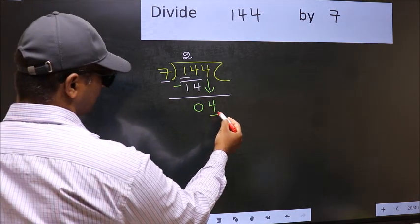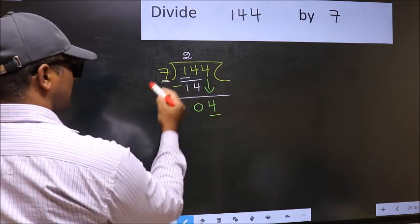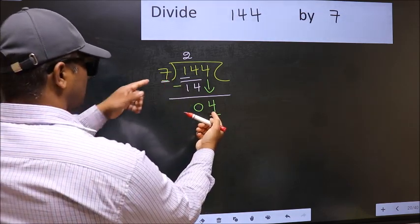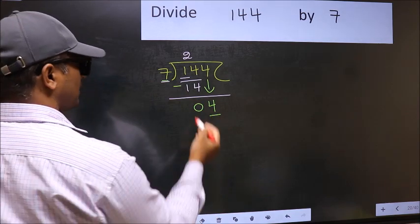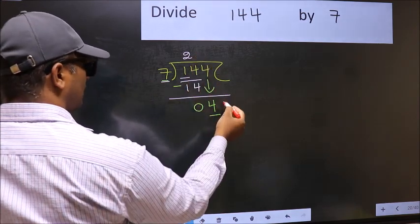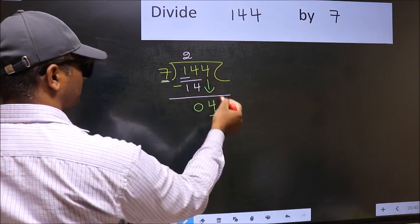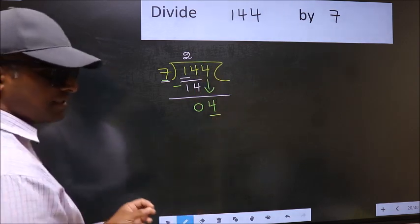And the mistake is this. Here we have 4 and here 7. 4 is smaller than 7. So what many do is, they directly put dot and take 0, which is wrong.